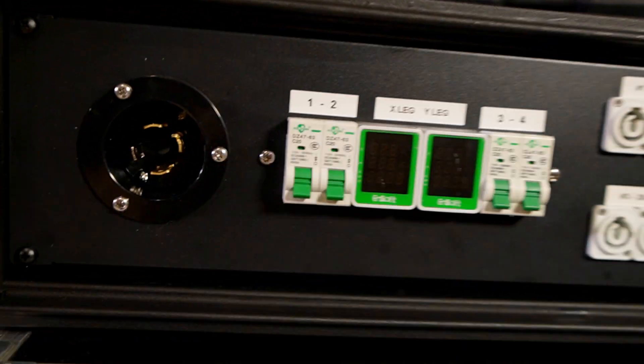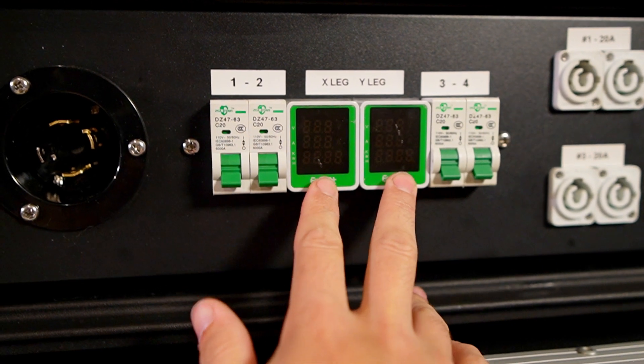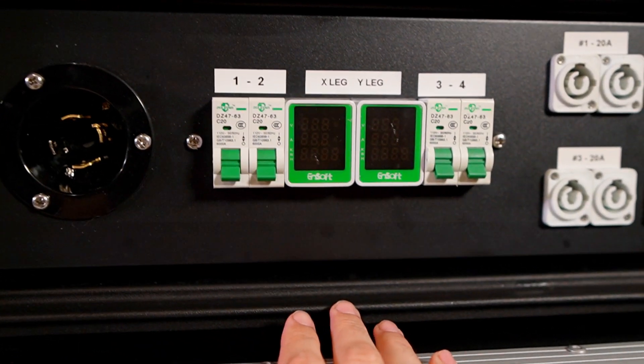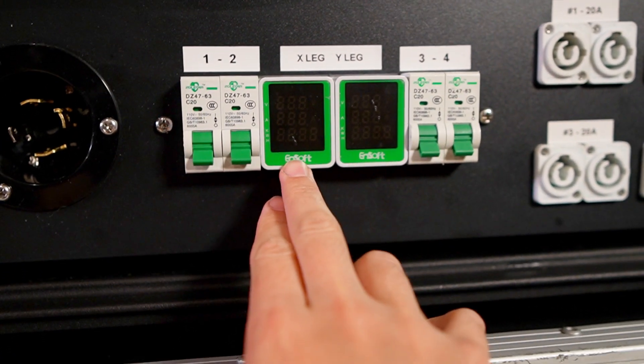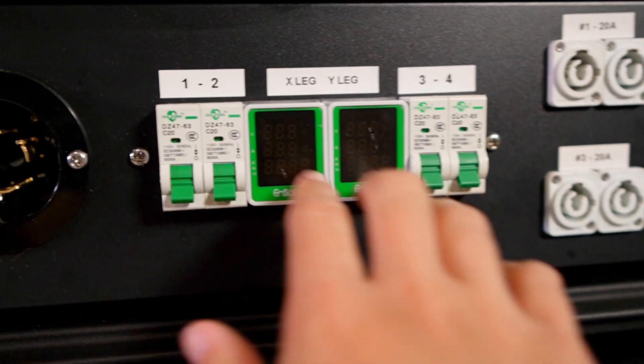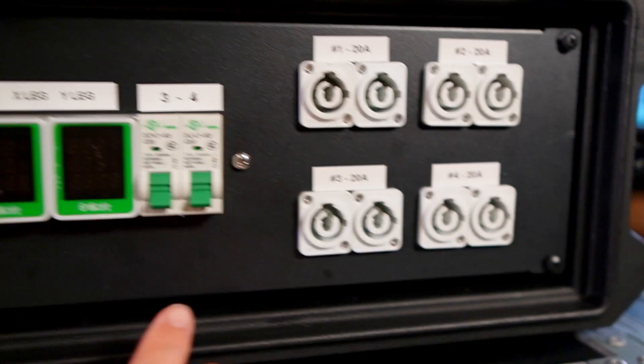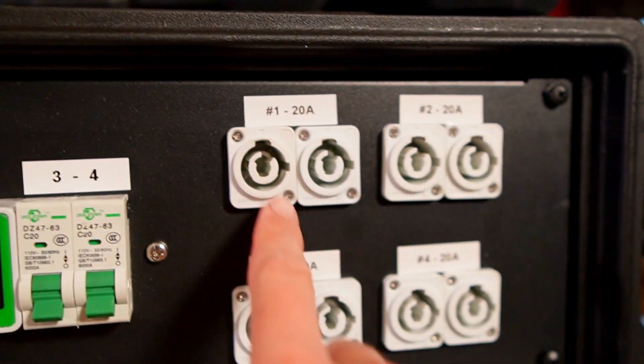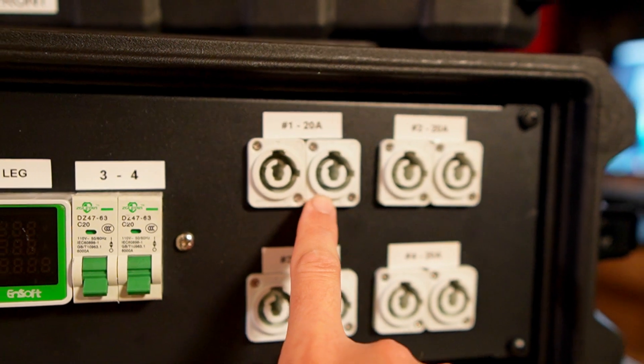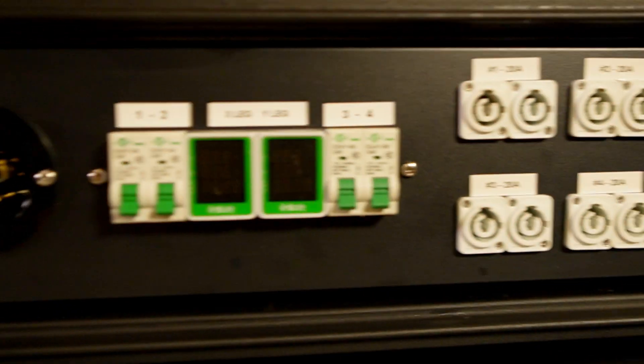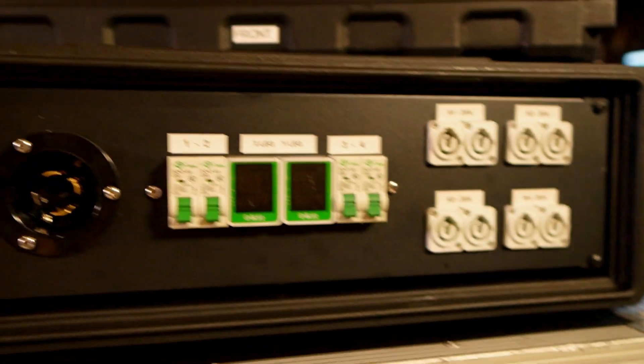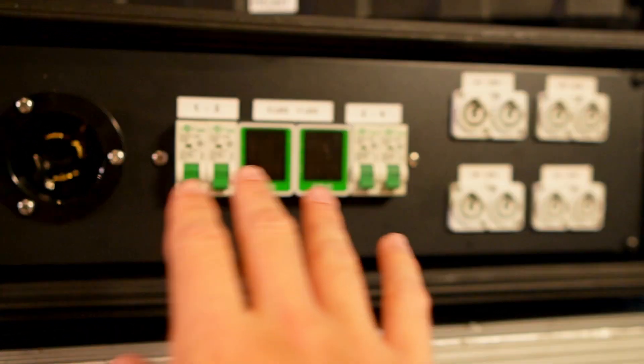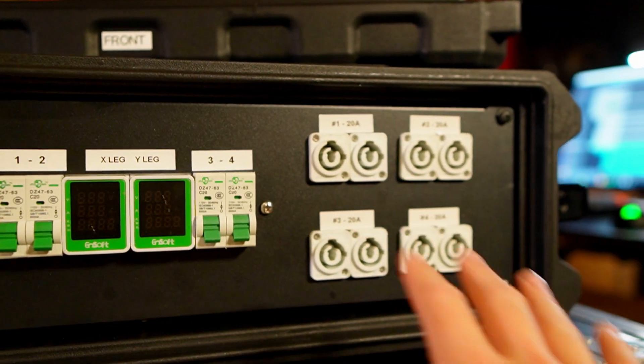So these are both tied to the two legs of the 240, so each leg of 120, each one of these are tied into. And then these split out to two 20 amp circuits, so this is like leg one, this is leg two, and there's two 20 amp circuits on each leg. And then I have two powercon outlets for each one of these four circuits. So that's really all there is to this thing, I'm just splitting out the legs and distributing it to these powercon outlets.